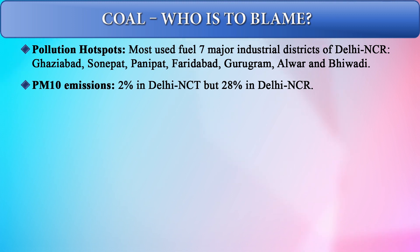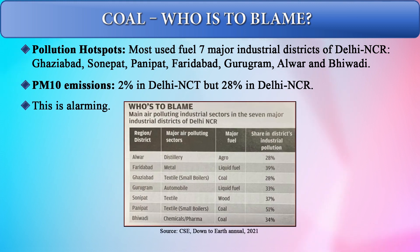Particulate matter is classified as PM10 and PM2.5 based on size, and these particles easily enter the lungs causing respiratory ailments. PM10 emissions in the Delhi National Capital Territory region account for 2%, but 28% in the broader NCR region — which is alarming. According to a Centre for Science and Environment table from Down to Earth (2021), the seven major industrial districts show emissions ranging from 30 to even 60 percent in certain regions, using coal, wood, or other fuel sources.